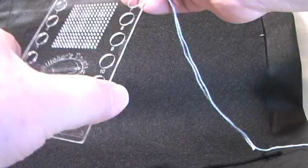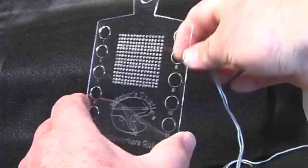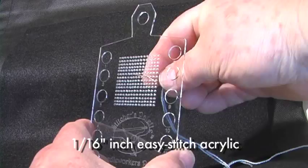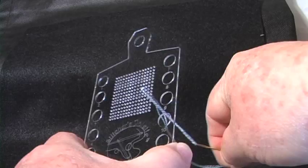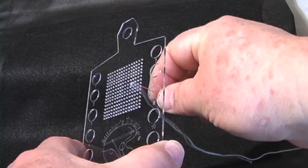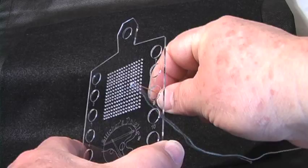Here's how it works, a very brief demo. We have a standard needle, standard thread. This is 16 inch thick acrylic, thinner than our usual Stitcher's palettes, which makes it easier for the needle to pass through with double and triple threads as well. So here we are going through and then coming back to do a very simple stitch.